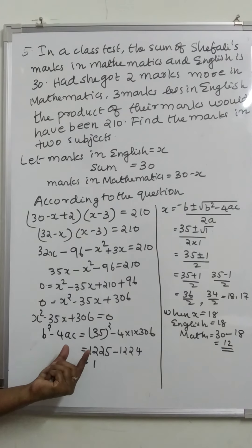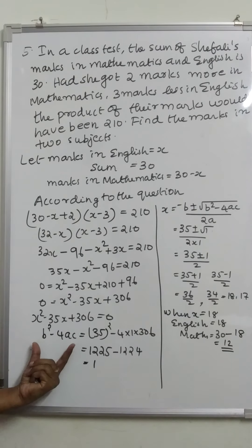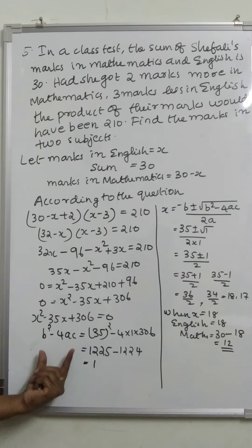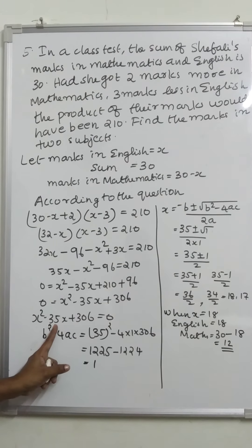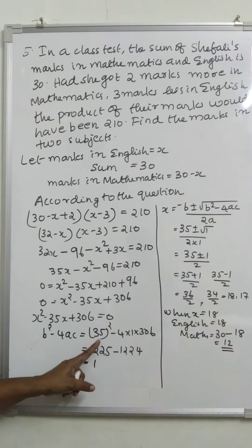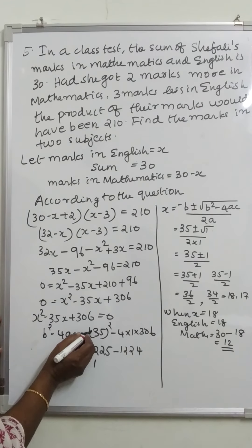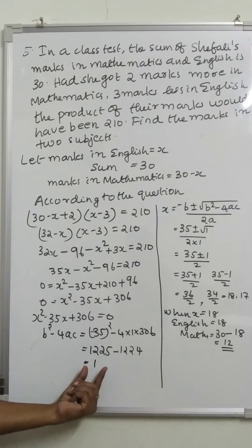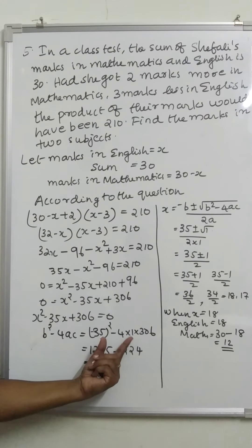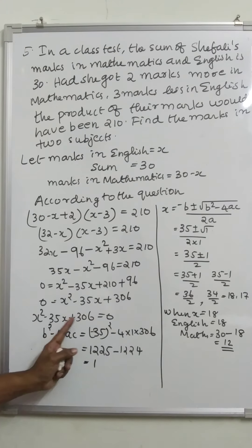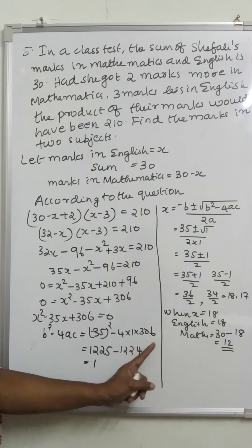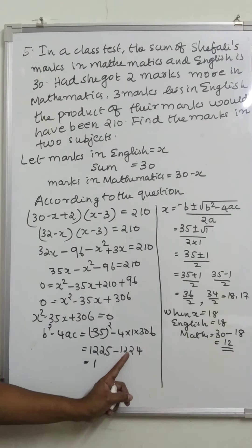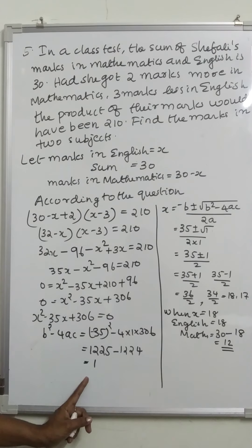Applying the quadratic formula, we first find b squared minus 4ac. Here b is equal to minus 35, so b squared is 35 squared which is 1225. Then 4ac is 4 into 1 into 306, that is 1224. So b squared minus 4ac is equal to 1225 minus 1224, which is 1.